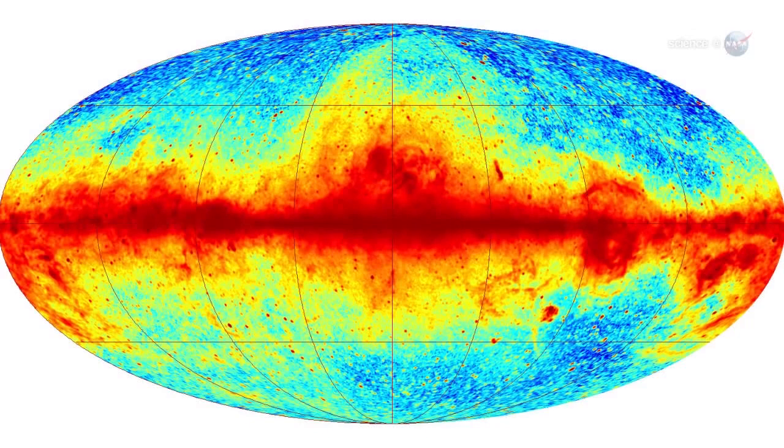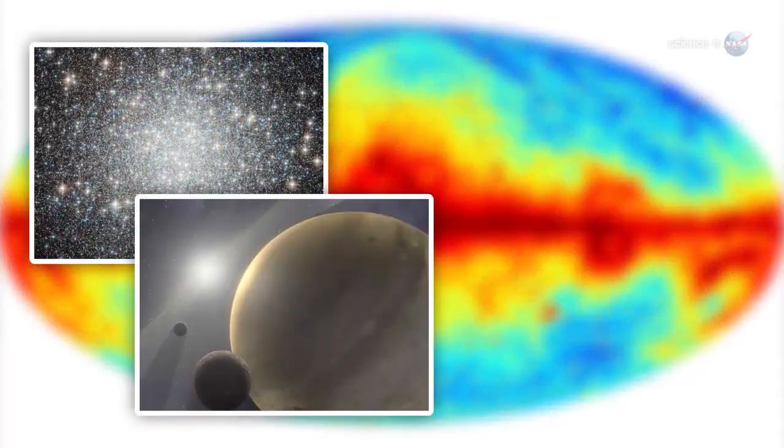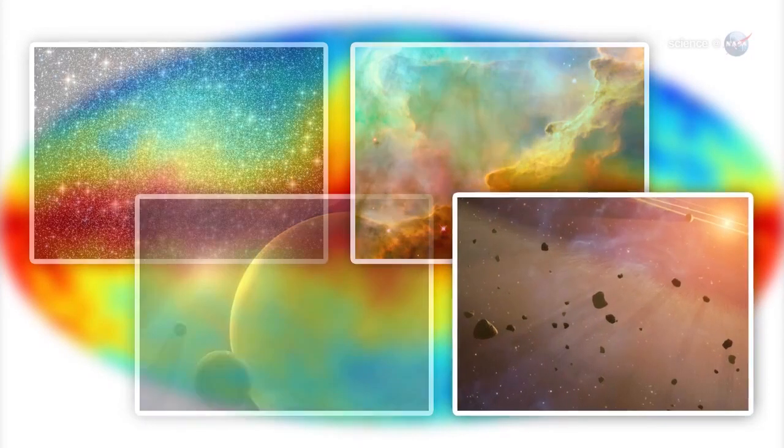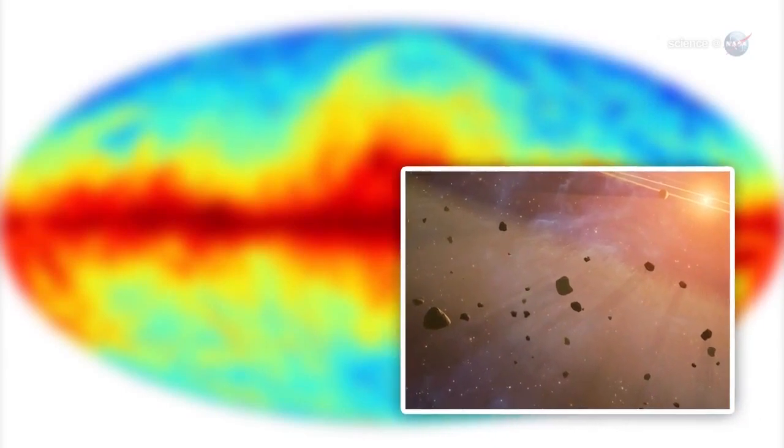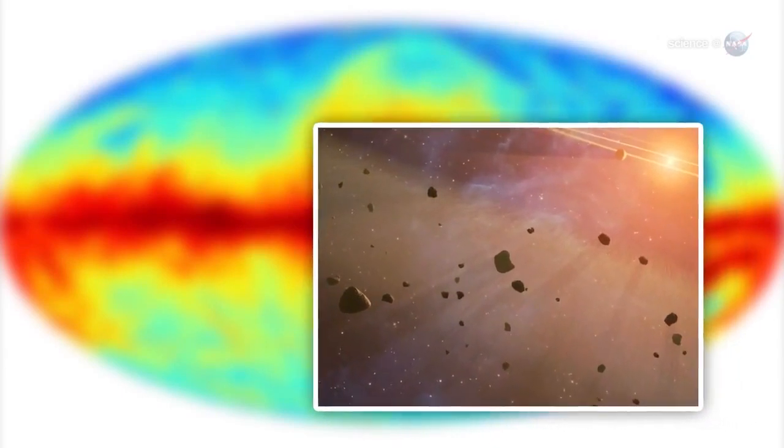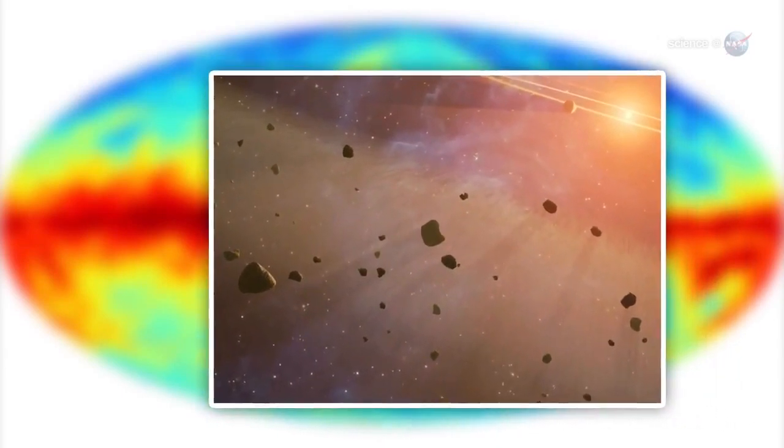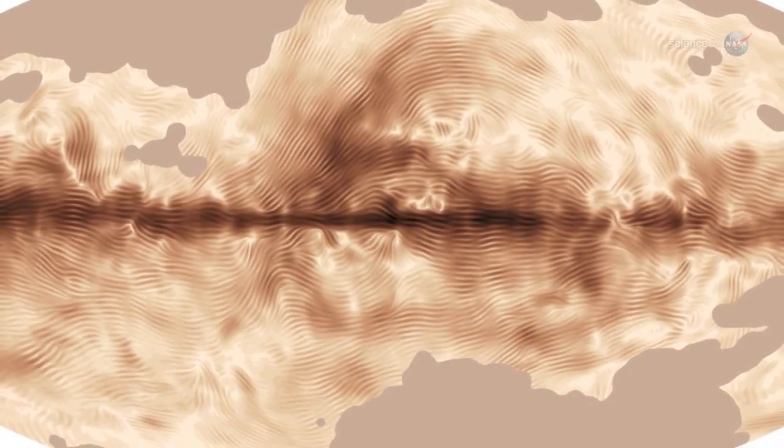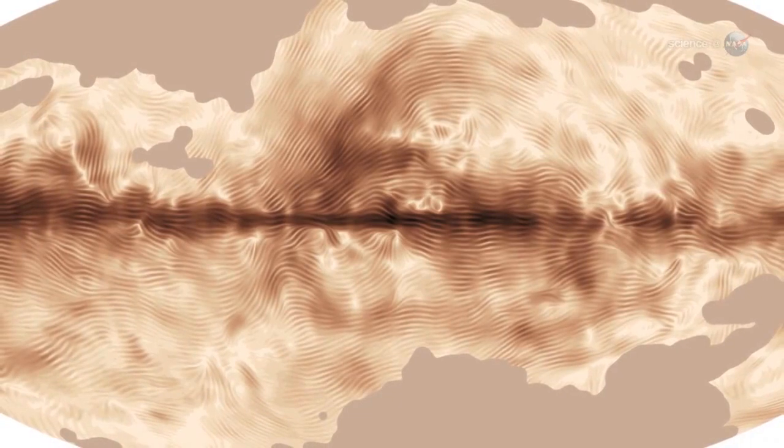The Milky Way is made up not only of stars and planets, but also of gas clouds and dust grains floating between the stars. Dust is the key. Interstellar dust shines with a microwave light that is polarized by galactic magnetism. Tracing the polarization allows researchers to map the Milky Way's vast magnetic field.